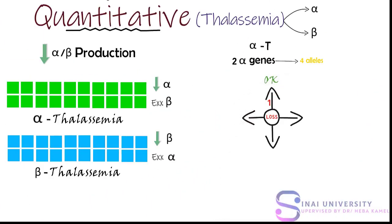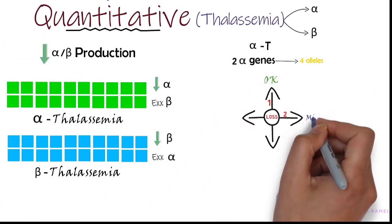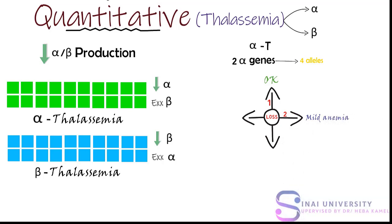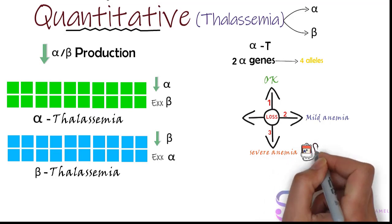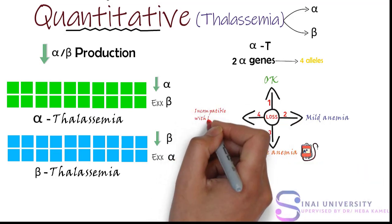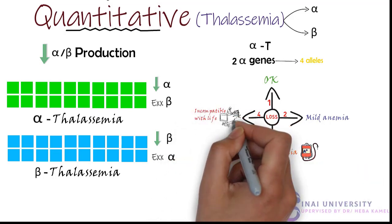Losing one allele causes no problem. Losing two may present mild anemia. Losing three causes severe anemia, and the patient needs blood transfusions. Losing all four alleles is incompatible with life.